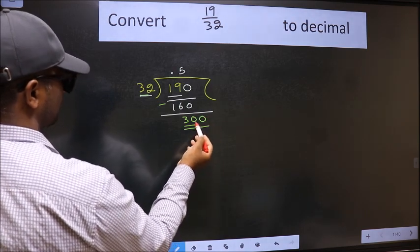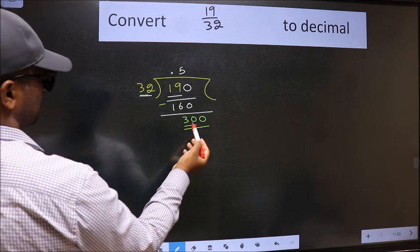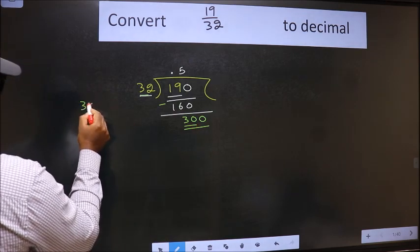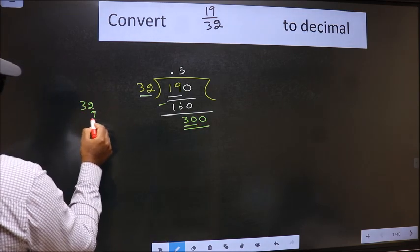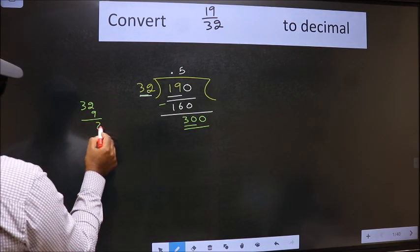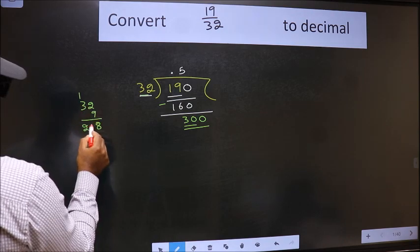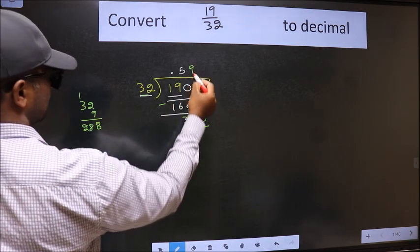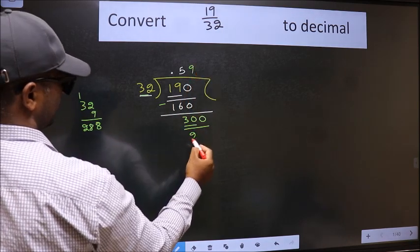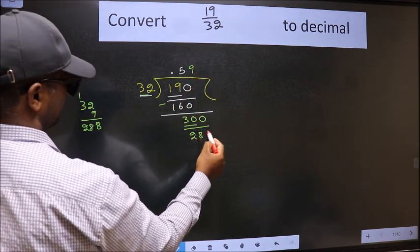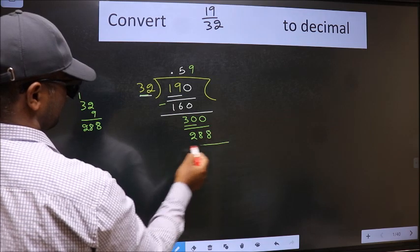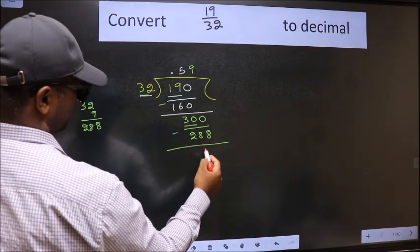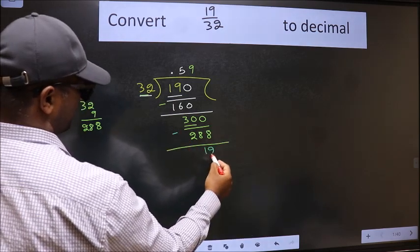A number close to 300 in the 32 table is: take 32 nines. 9 twos are 18, 9 threes are 27 — 32 nines is 288. Now we should subtract. We get 12.